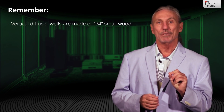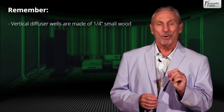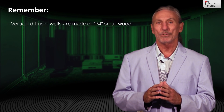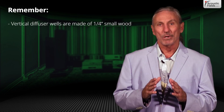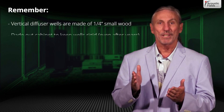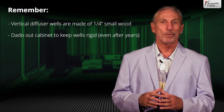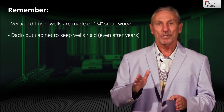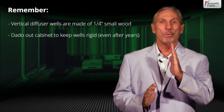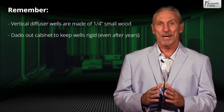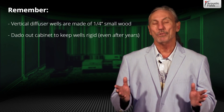One thing to realize when building a diffuser is that the vertical wells are made of very thin, quarter-inch wood. Wood has moisture in it and over time it starts to dry out, so with quarter-inch vertical wells we must dado — or provide slots — in the cabinet in order to keep that wood rigid. Two to four years after you build it, you don't want wiggle in your vertical wells because that will affect performance. By dadoing the back, top, and bottom of the cabinet, you avoid that phenomenon.